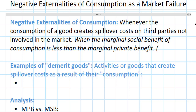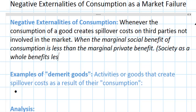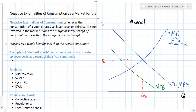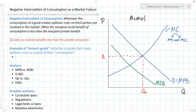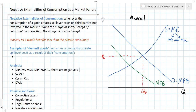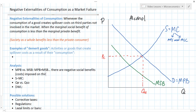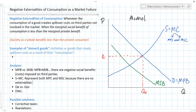How do we interpret this? Society as a whole benefits less than the private consumer because of the negative consumption externalities — there are harms imposed on society resulting from the good's consumption. On our graph, the marginal private benefit is greater than the marginal social benefit. There are negative social benefits, meaning costs imposed on third parties as a result of the negative externality of consumption. The supply and marginal cost curve represent both the MPC and MSC, because there are no externalities of production in this case.